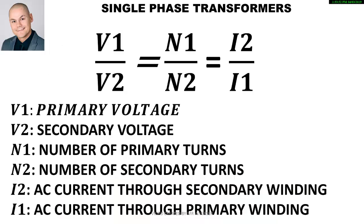The equation for single phase transformers must balance out as V1 over V2, equals N1 over N2, equals I2 over I1. The reason why I2 is on top is because current behaves in the opposite manner to the number of turns and the voltage.